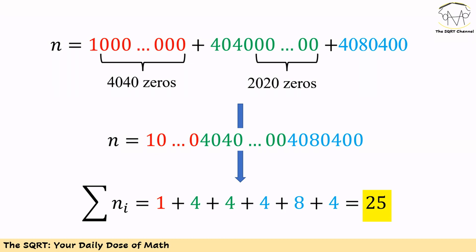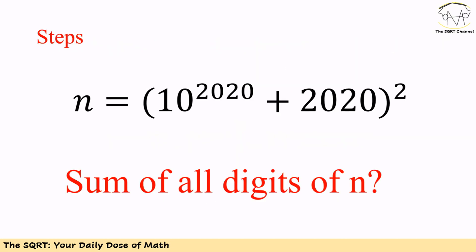The sum of digits is straightforward. We have 1 for the first term, 4 and 4 for the second term, and 4, 8, and 4 for the last term. Adding them together: 1 + 4 + 4 + 4 + 8 + 4 = 25.